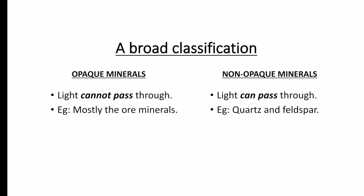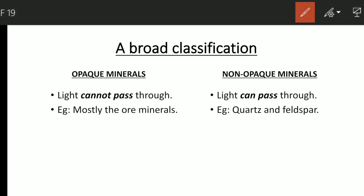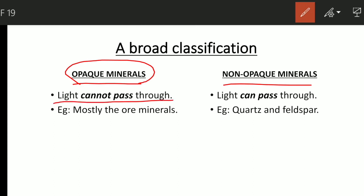Now we move to the very broad classification — the first classification — which is opaque minerals and non-opaque minerals. Opaque minerals are those through which light cannot pass. Non-opaque minerals are those through which light can pass.